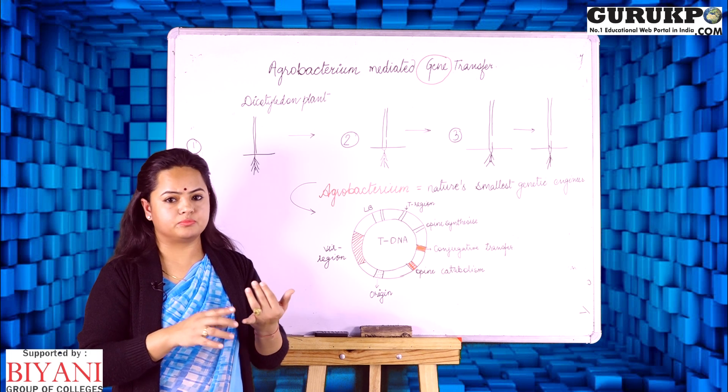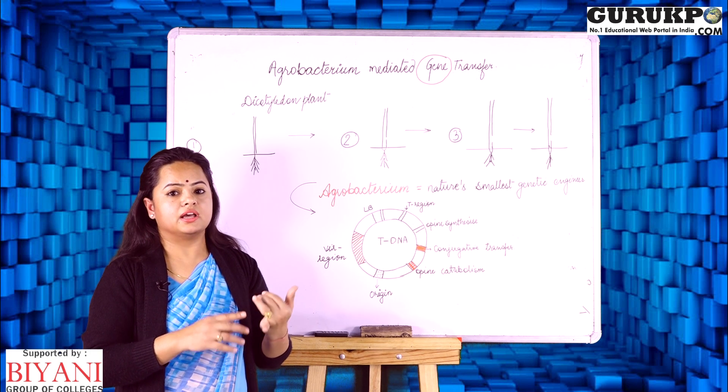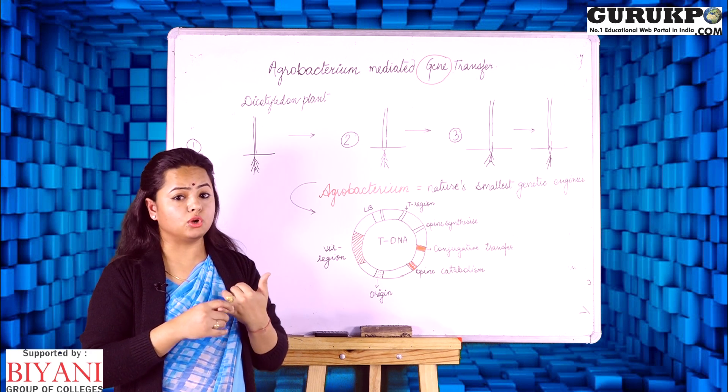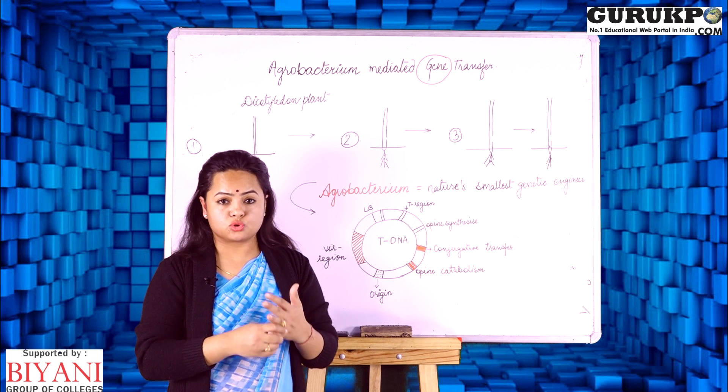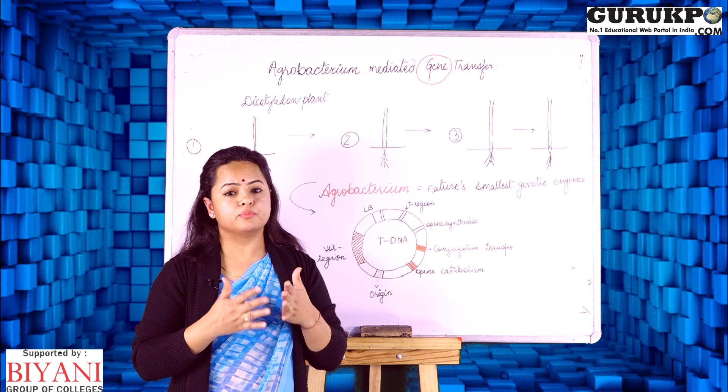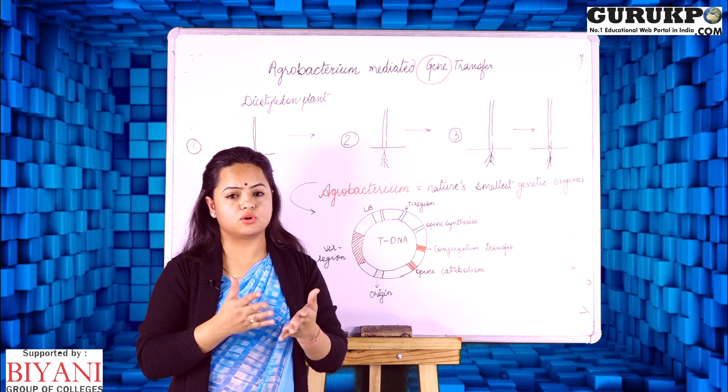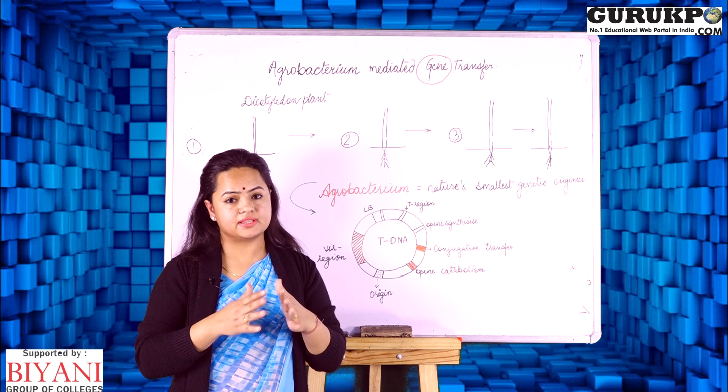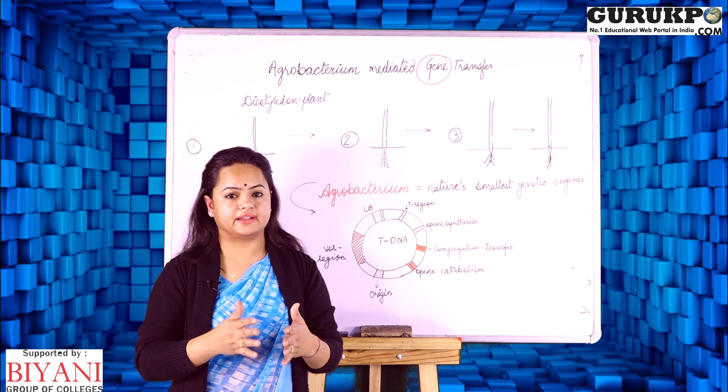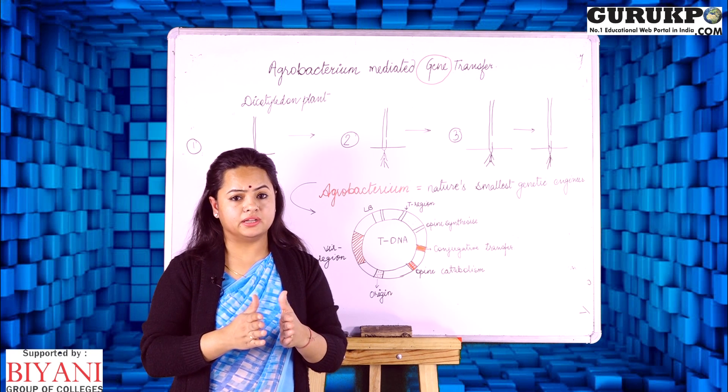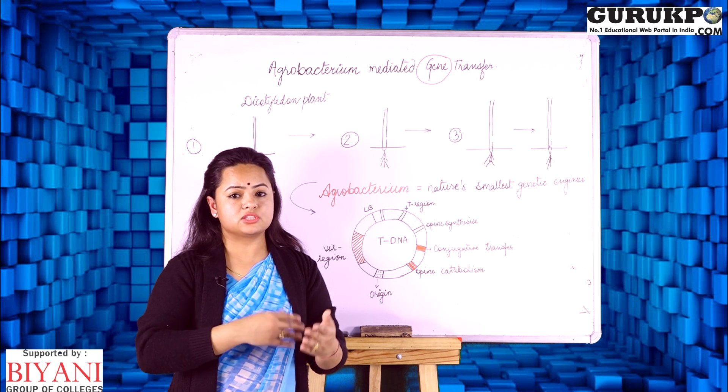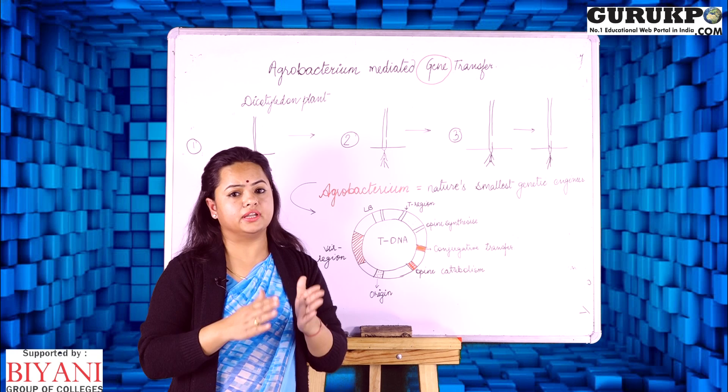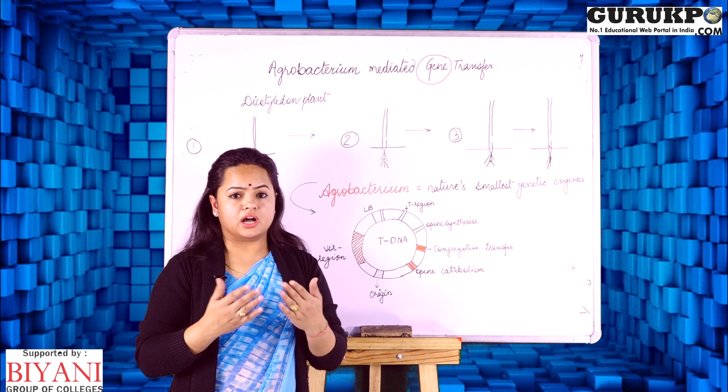These examples are BT cotton, BT brinjal, and golden rice. Golden rice is a good source of iron as well as carbohydrate. So we are working on the improvement of the quality of the seed, oil, flower color and various other parameters to enhance the characteristics in a particular plant, taking a gene of interest from any other plant so that this quality can be inculcated or incorporated in our plant.